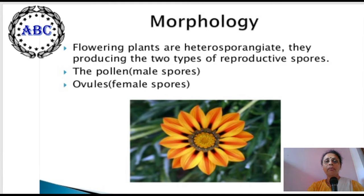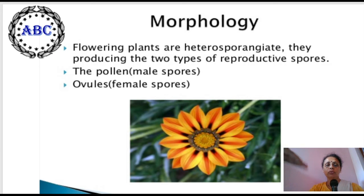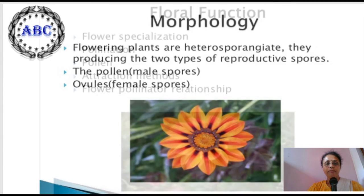Morphologically, flowering plants are heterosporangiate. They produce two types of reproductive spores: the pollen, which are male spores also called microspores, and ovules, which are called female spores.